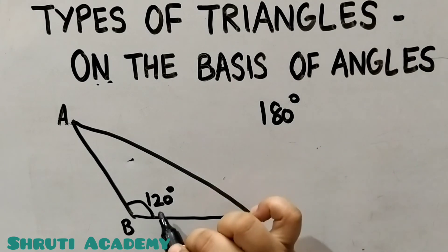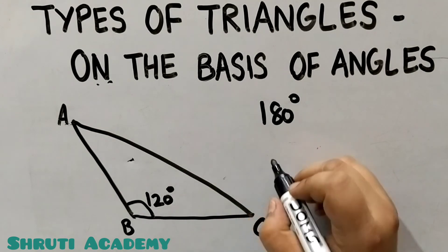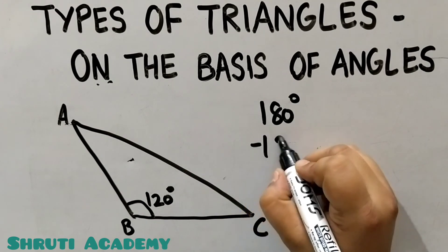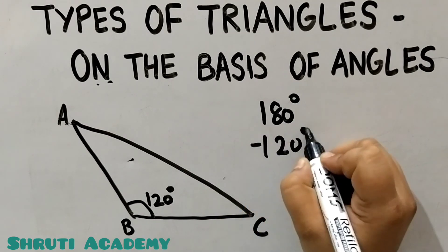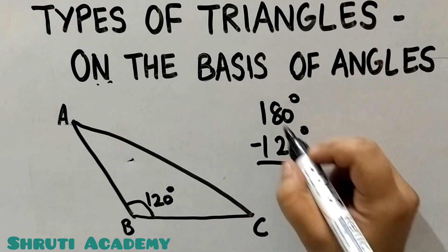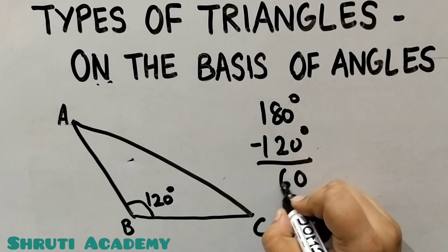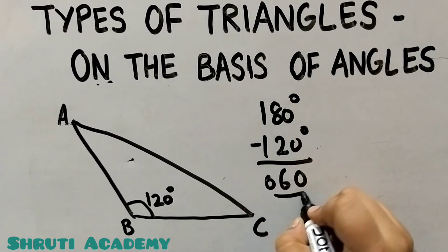The total angles of a triangle are 180 degrees. If one angle is 120 degrees, then the remaining angles together are 180 minus 120 equals 60 degrees.